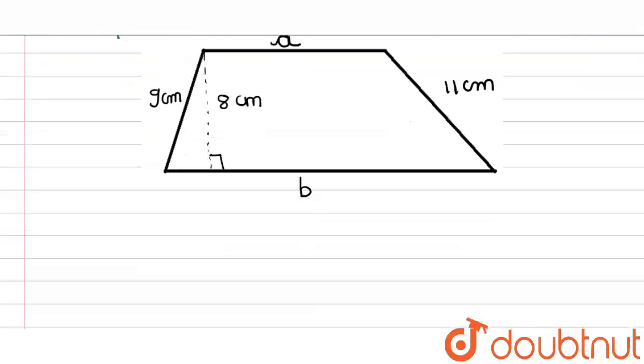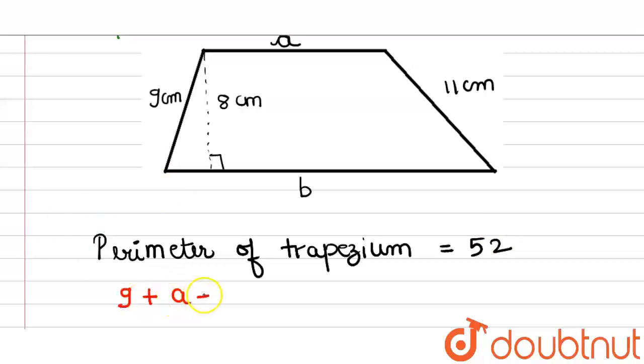Now we know what is the perimeter of trapezium. The perimeter of trapezium is given as 52 cm. So it is 52, this is given. Now what is perimeter? It is the sum of the length of sides. So it is 9 plus A plus B plus 11, and this is my 52.